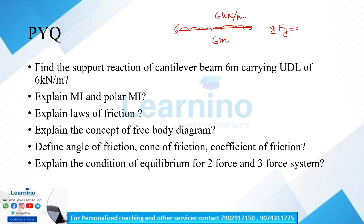These two equilibrium equations are used. We have the support reaction. The UDL of 6 kN per meter gives a total load. For moment of inertia: we have area moment of inertia — this is I = integral of x squared dA. The polar moment of inertia J equals Ix plus Iy.